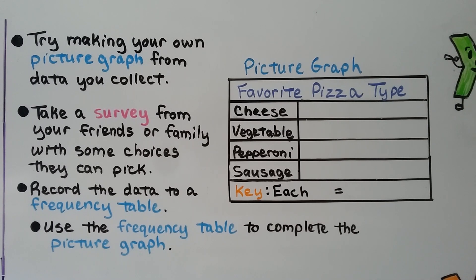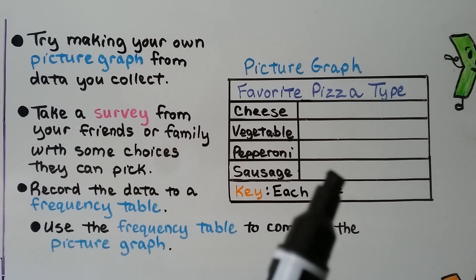You can try making your own picture graph from data you collect. Take a survey from your friends or family with some choices they can pick. You record the data to a frequency table. Remember, frequency tables use numbers, and then use the frequency table to complete the picture graph.